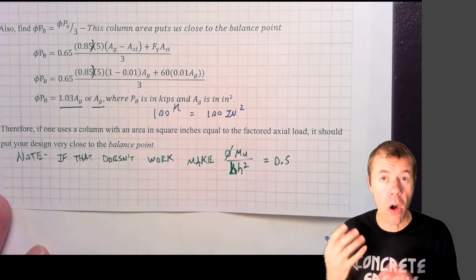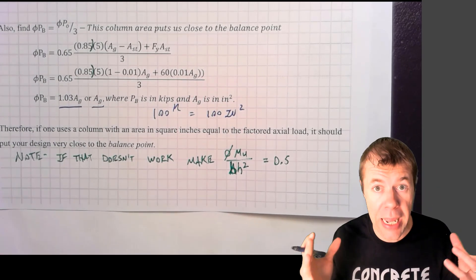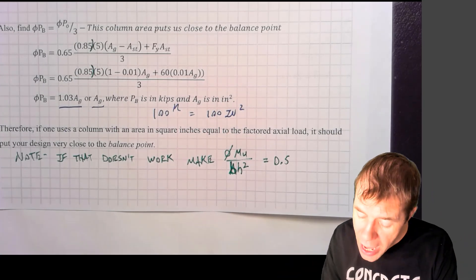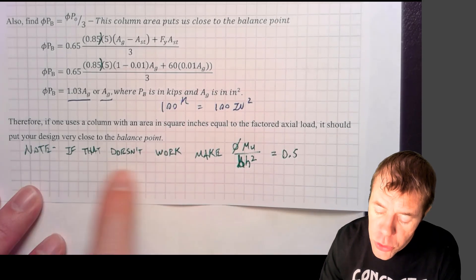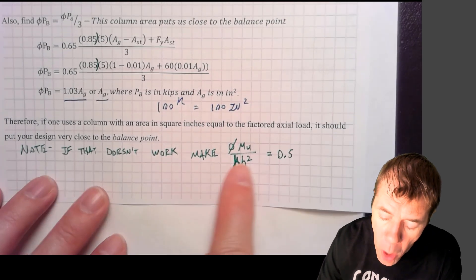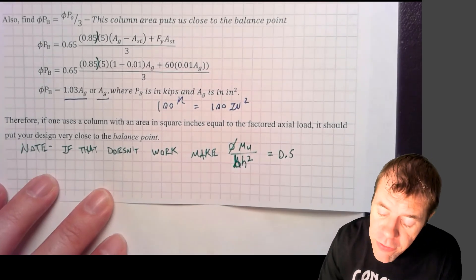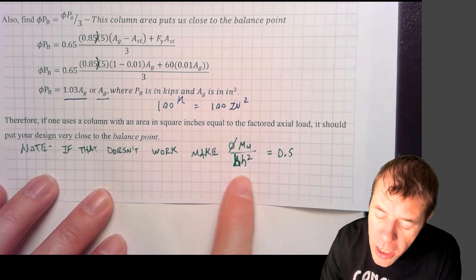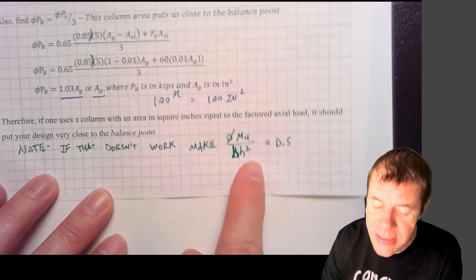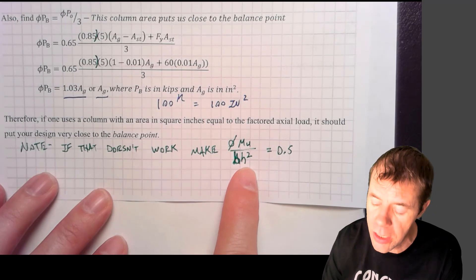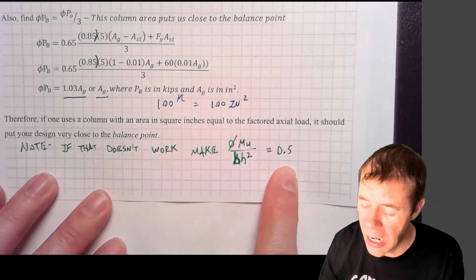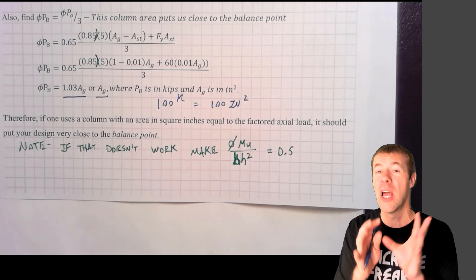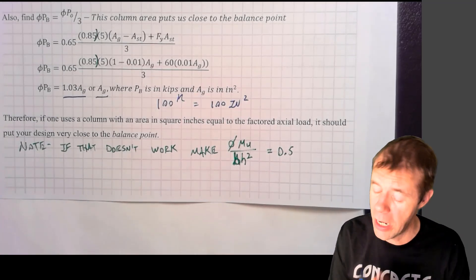But now, there are times when moment dominates your column. It can happen. And if this doesn't work, if this same trick I showed you here doesn't work, then what you can do is you can make this moment, your factored moment, divided by bh squared or whatever value is on the x-axis in the non-dimensional interaction diagram, and you can force that to be about 0.5. I know, this probably seems really confusing right now, but what I've just told you is some super awesome secret weapons.